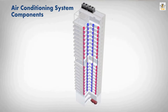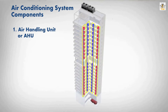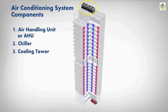There are three basic components of a building's air conditioning system. They are: Air Handling Unit, abbreviated as AHU; Chiller; and Cooling Tower.